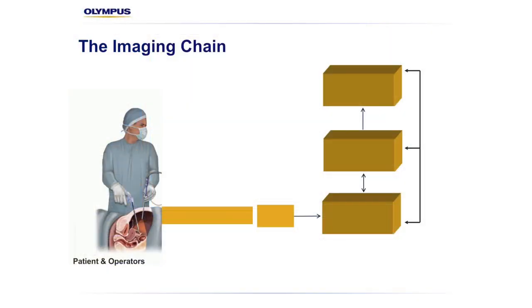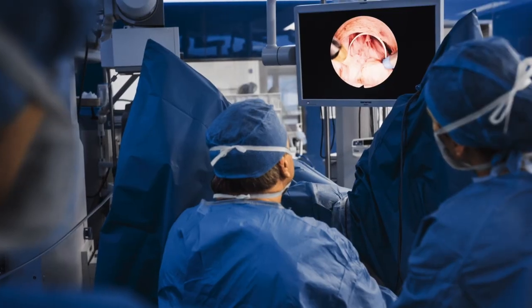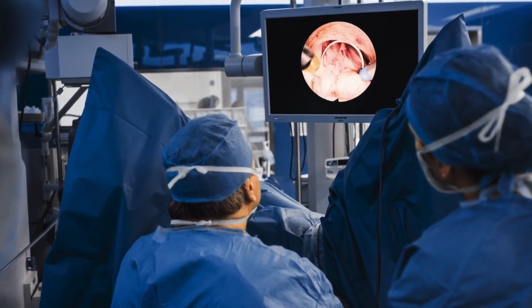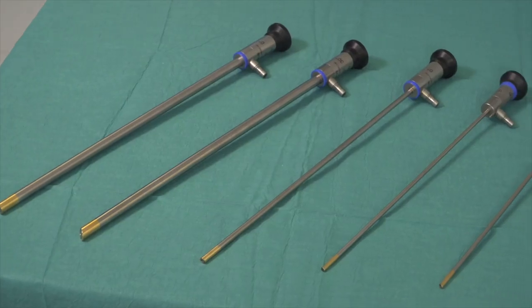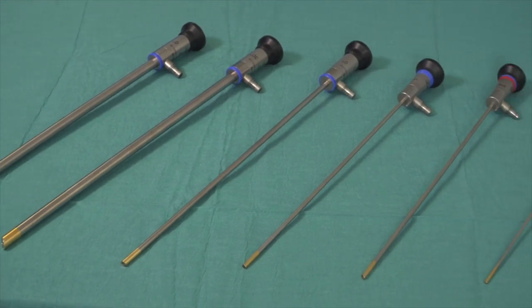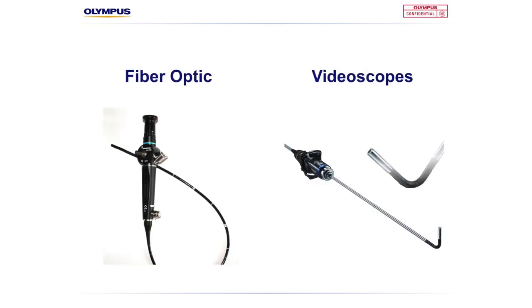For the first component of our chain, let's start at the patient end with the imaging instrument that comes into direct contact with our patient — the telescope. The telescope is the first component of our surgical imaging chain. It is a tool used to observe an object from an appropriate distance and relay the image to the observer in a practical way. The typical type used in laparoscopic surgery is a rod lens telescope, but there are also fibre optic and video scopes, each with their own advantages and disadvantages. For more in-depth discussion on the different types, please see the Olympus Imaging Three Types of Scope video.